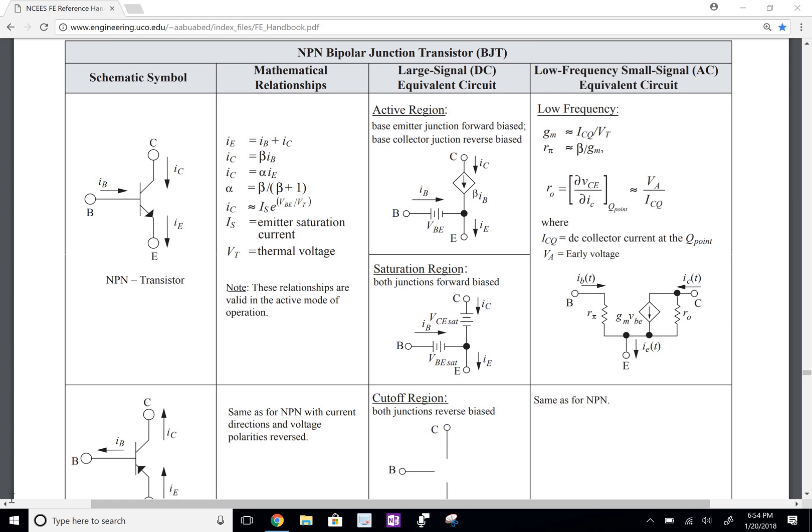we can see the low frequency small signal equivalent circuit for the BJT. So, we're just going to copy that circuit down and solve for the output voltage at the collector there, so that node right there.